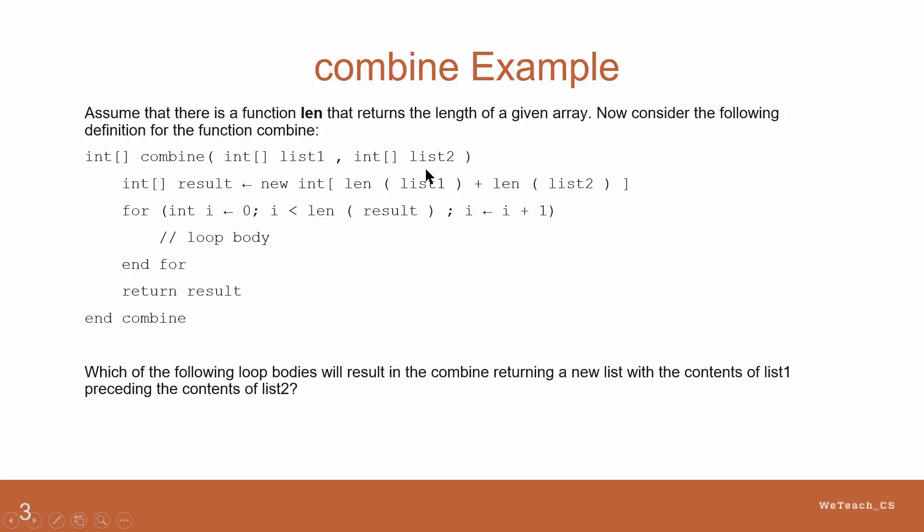The method receives two array parameters, list1 and list2. It creates a third array whose length is the sum of the lengths of both parameter arrays. The loop is then supposed to load the values from both arrays into the new one, with the values from list1 going first and then the values from list2 next.